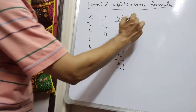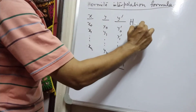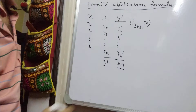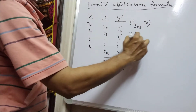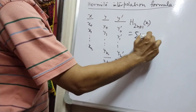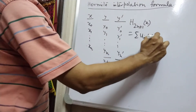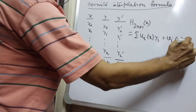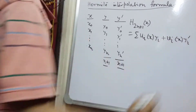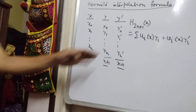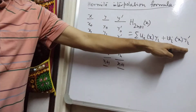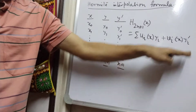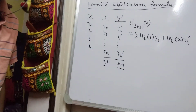Hence, we assume that the Hermite interpolation formula is a polynomial of degree 2n plus 1, which we represent as the sum of u_i(x)·y_i plus v_i(x)·y_i prime — a linear combination satisfying both functional values and values of the derivatives at the nodal points.